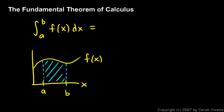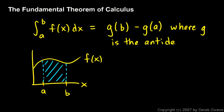And the fundamental theorem of calculus says that that area is equal to g(b) minus g(a), and this function g that just showed up, g is the antiderivative of this function f, so we'll take note of that. It's equal to g(b) minus g(a), where g